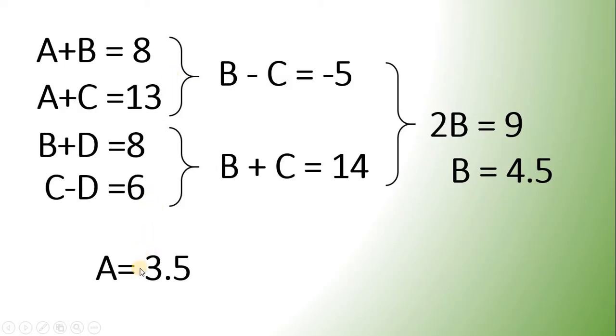Now, we have the value of A. We can now find the value of C. A plus C is equal to 13. Therefore, C must be 9.5. Because 3.5 plus 9.5 will give us 13.